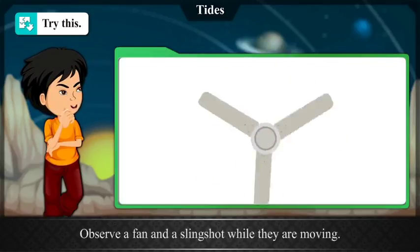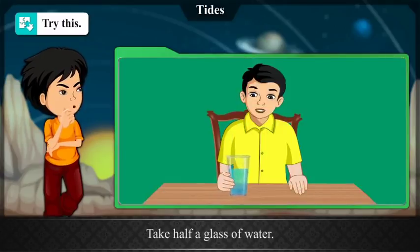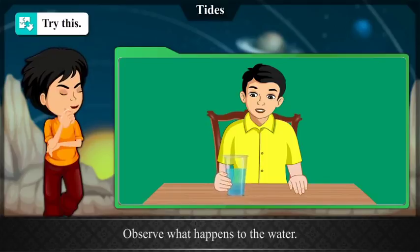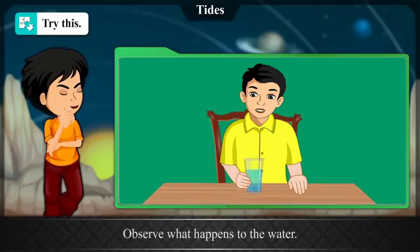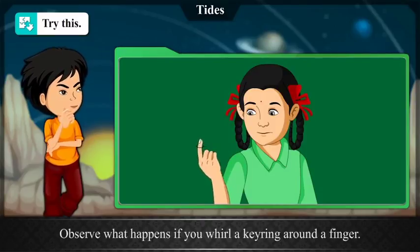Observe a fan and a slingshot while they are moving. Take half a glass of water. Slowly move the glass in one direction in a circular fashion. Observe what happens to the water. Also observe what happens if you whirl a key ring around a finger.